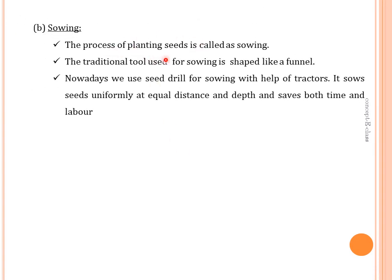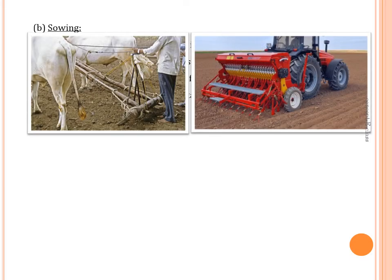The process of planting seeds is called sowing. The traditional tool used for sowing is shaped like a funnel. Nowadays we use a seed drill for sowing — it sows seeds uniformly at equal distance and depth, and saves both time and labor.